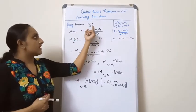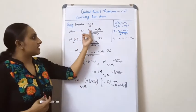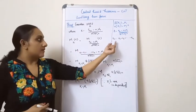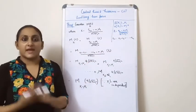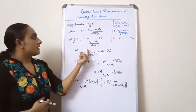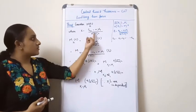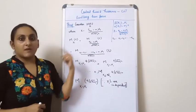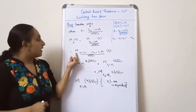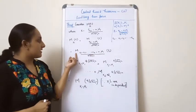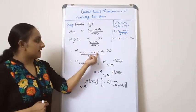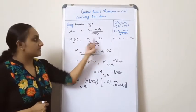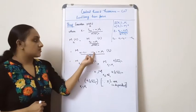Now consider M_t(Z), where Z = (Sn - nμ₁) / √(nσ₁²). From the statement we know Sn = x1 + x2 + ... + xn. Substituting this value, M_t(Z) = M_t of (x1 + x2 + ... + xn - nμ₁) / √(nσ₁²).